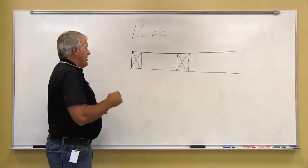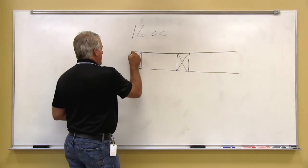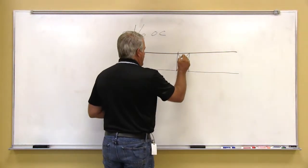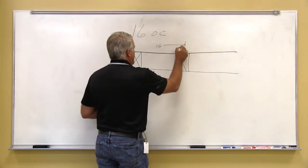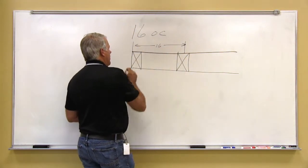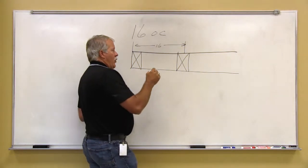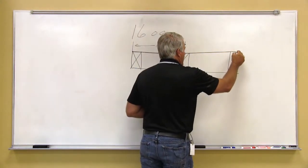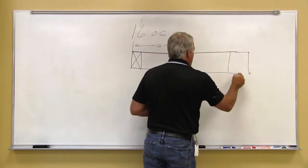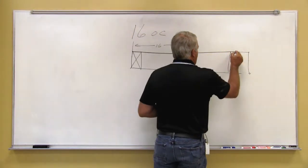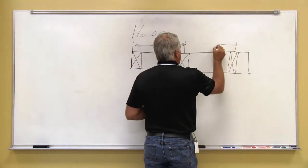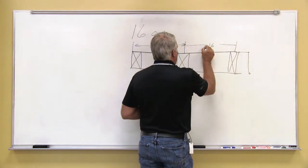When we say 16 inch on center, that means from this point to the center of this 2x needs to be 16 inches on center. And so forth down the line. So the next stud will once again be 16 inch on center.